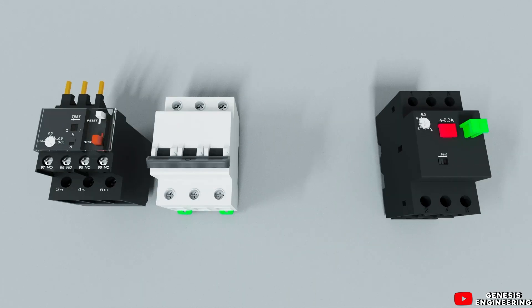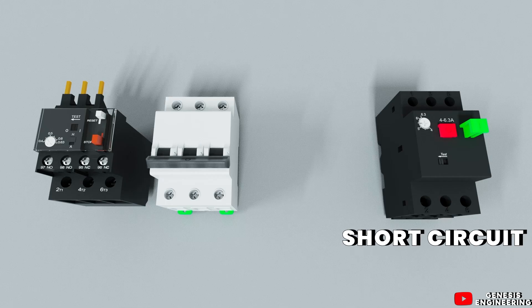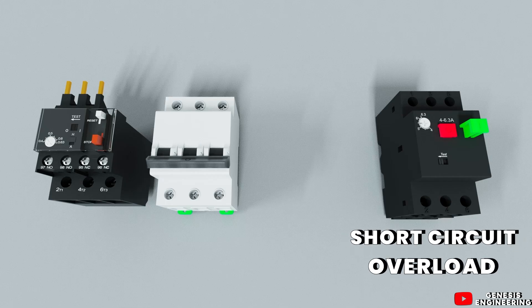When the motor circuit breaker is used in the circuit, it will already protect against short circuit and motor overload, replacing both the thermal relay and the miniature circuit breaker (MCB).